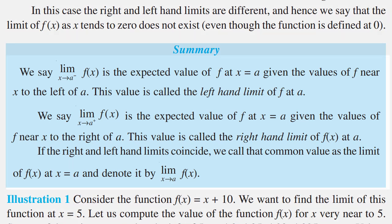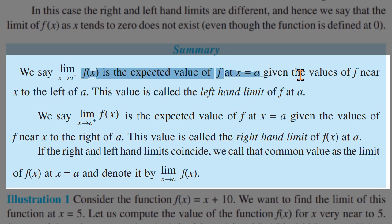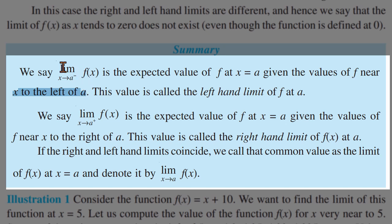The limit — specifically the left-hand limit. The function f, limit x tends to a from the negative side, is the expected value of f at x equals a, given the values of f near x to the left of a. For example, if a is 0, then the left-hand limit at 0 is the expected value from the left side.